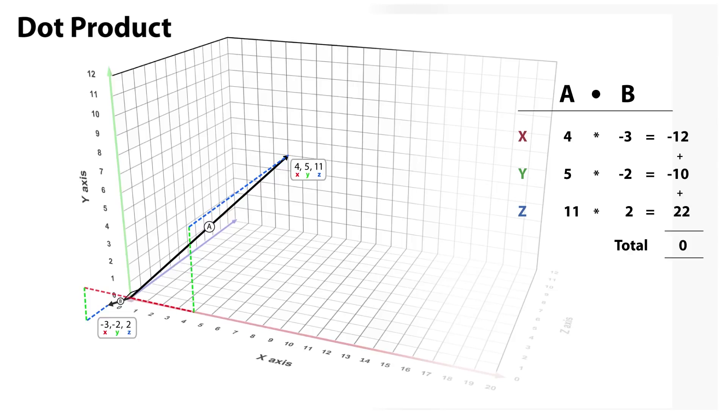This time vector a is 4, 5, 11. And b is minus 3, minus 2, 2. Multiplying these components gives us minus 12, minus 10, 22. The sum of which is 0. So these two vectors are also perpendicular.